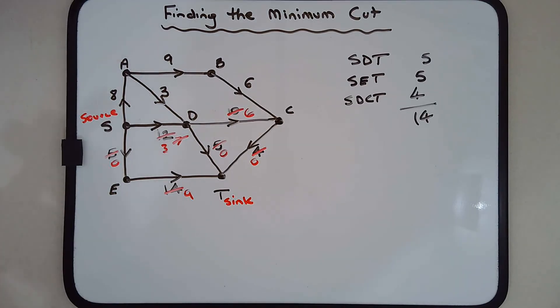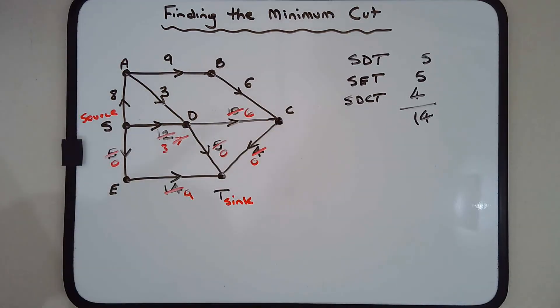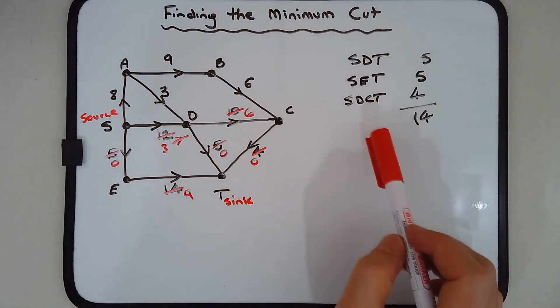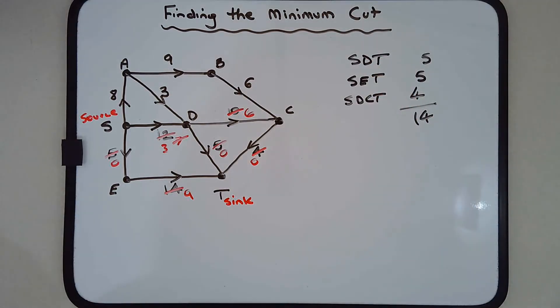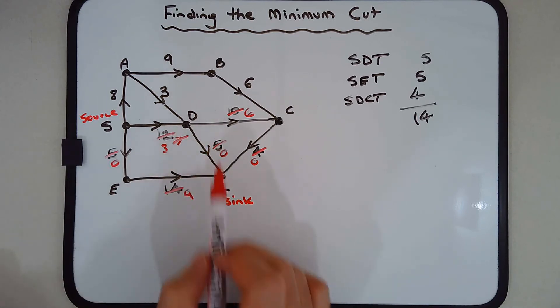The question is, if I made a whole lot of cuts, how do I know which one is the minimum cut? The minimum cut would have to cut these three paths somewhere. If you look at SDT, this path here, the edge of lowest weight is 5, which represents the lowest capacity. I'm going to put an X mark there.